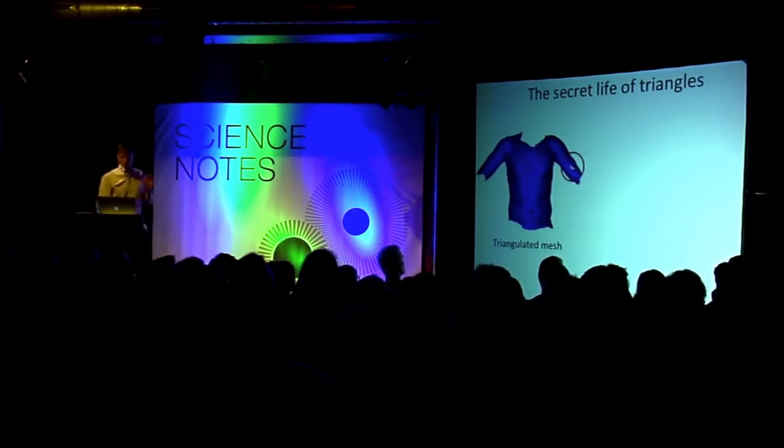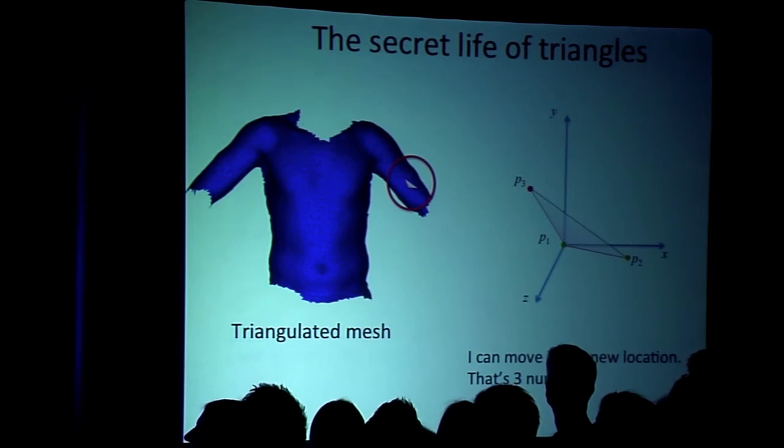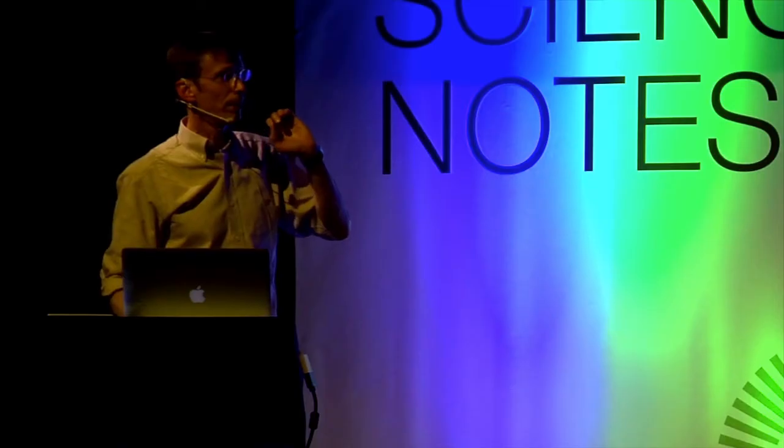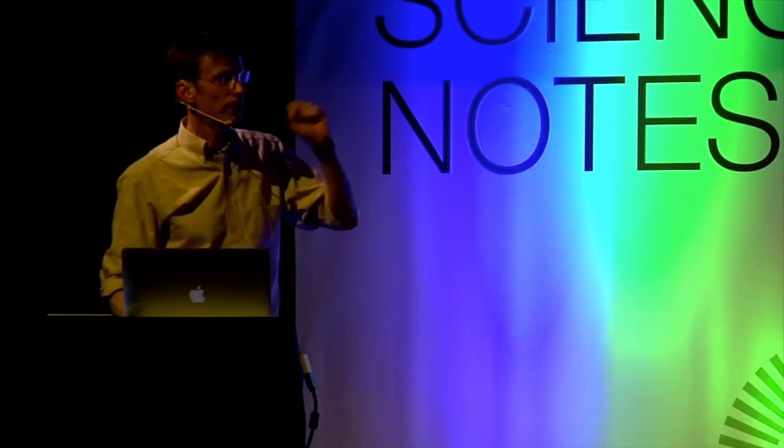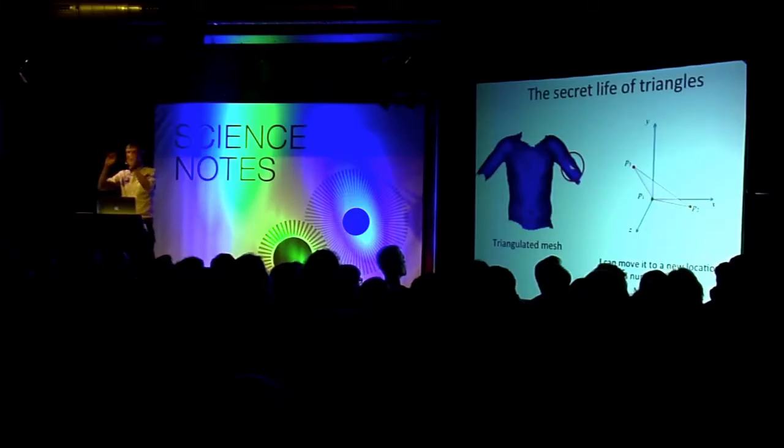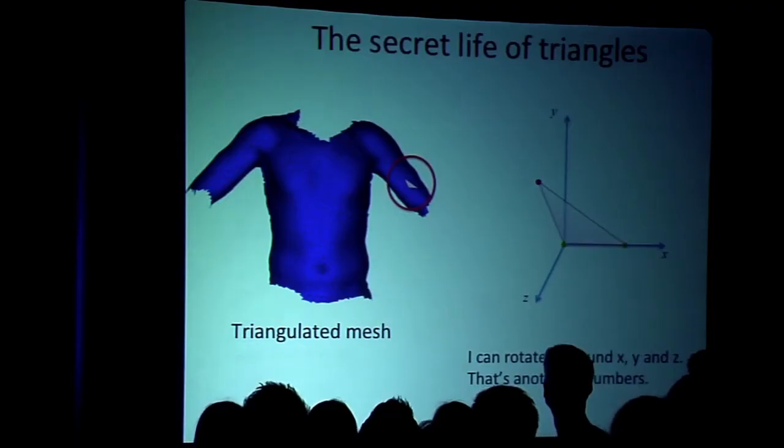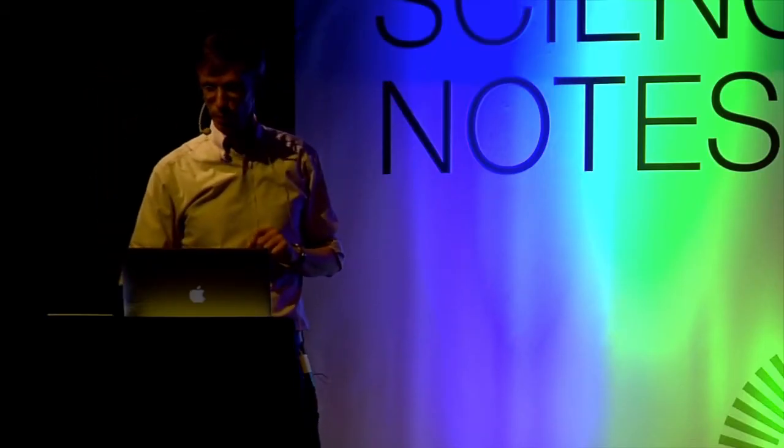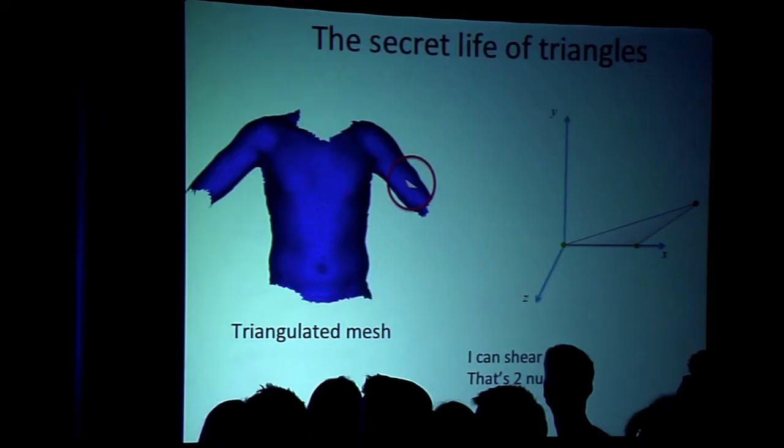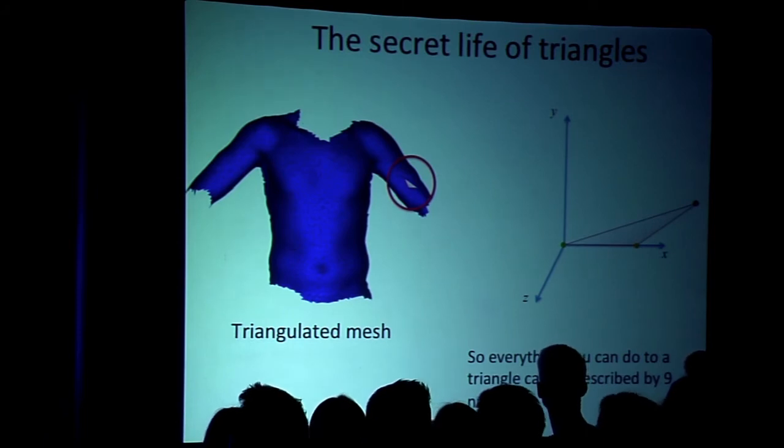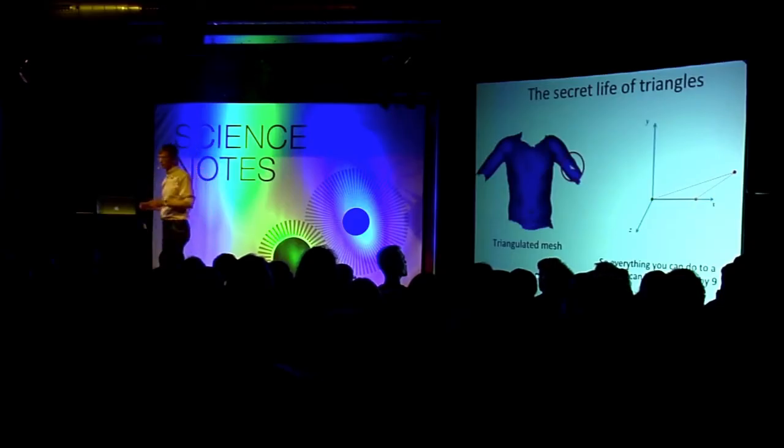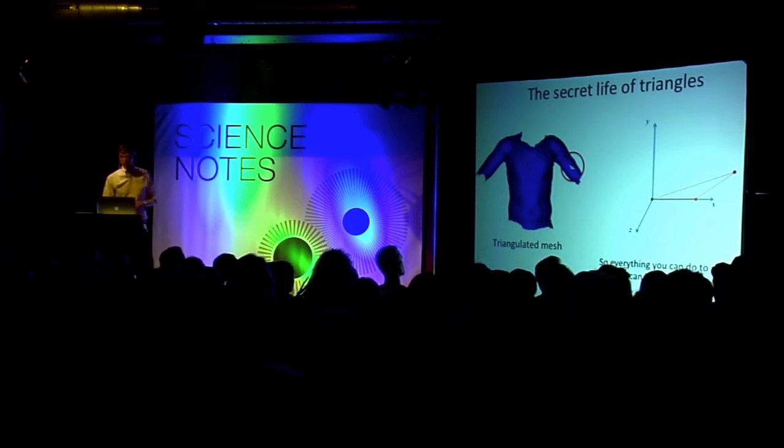Well, the first thing to think about, triangles can't do a whole lot. Let's take a single triangle on this template mesh. What we can do is we can move it in space. That's three numbers. We can translate it in X, Y, and Z. We can rotate it around the three axes. That's three more numbers. We can scale it. That's a single number, a uniform scale. And we can shear it in a plane, and that's another two numbers. So, that's a total of nine numbers to describe everything you can possibly think of doing to a single triangle in three dimensions.